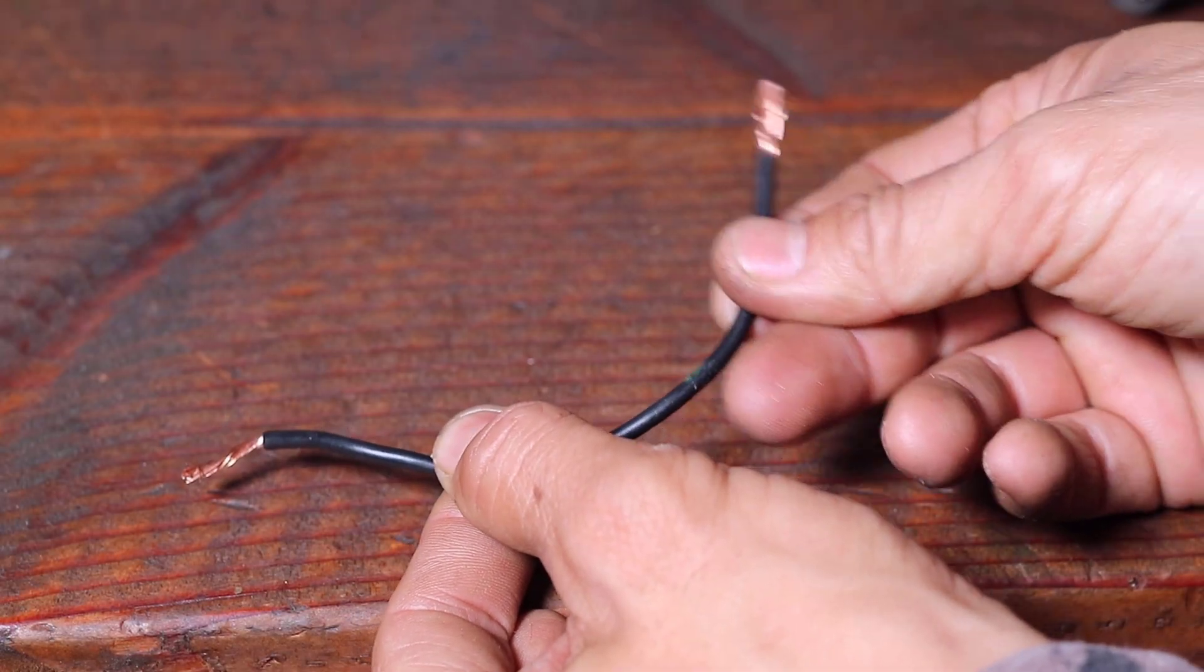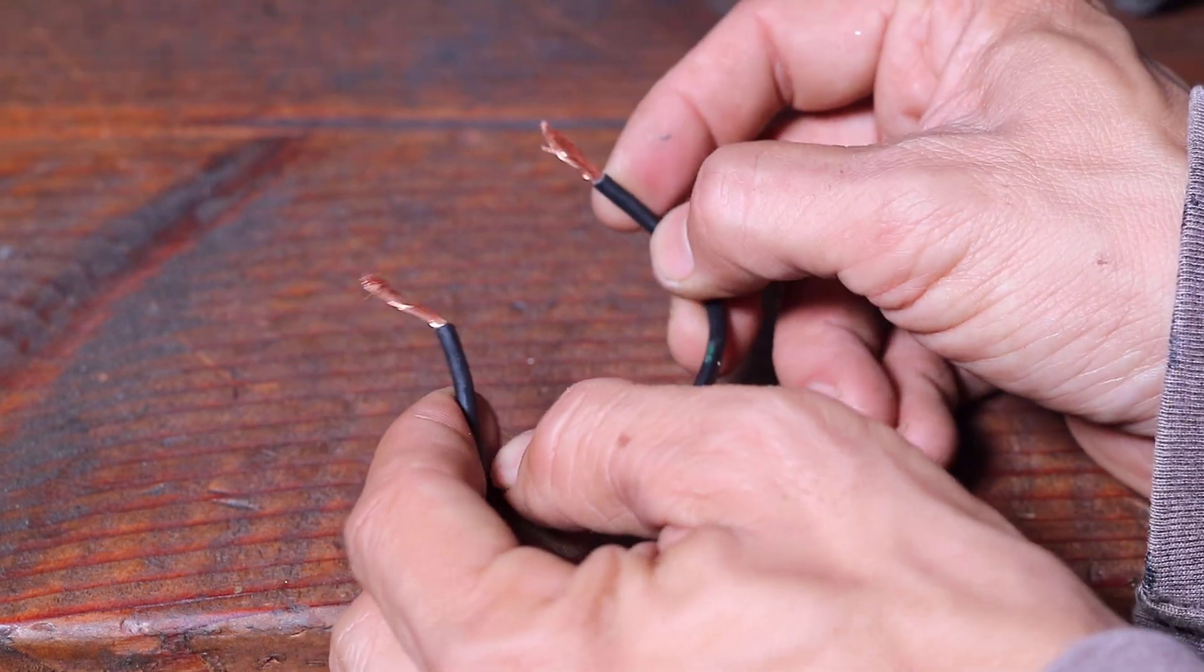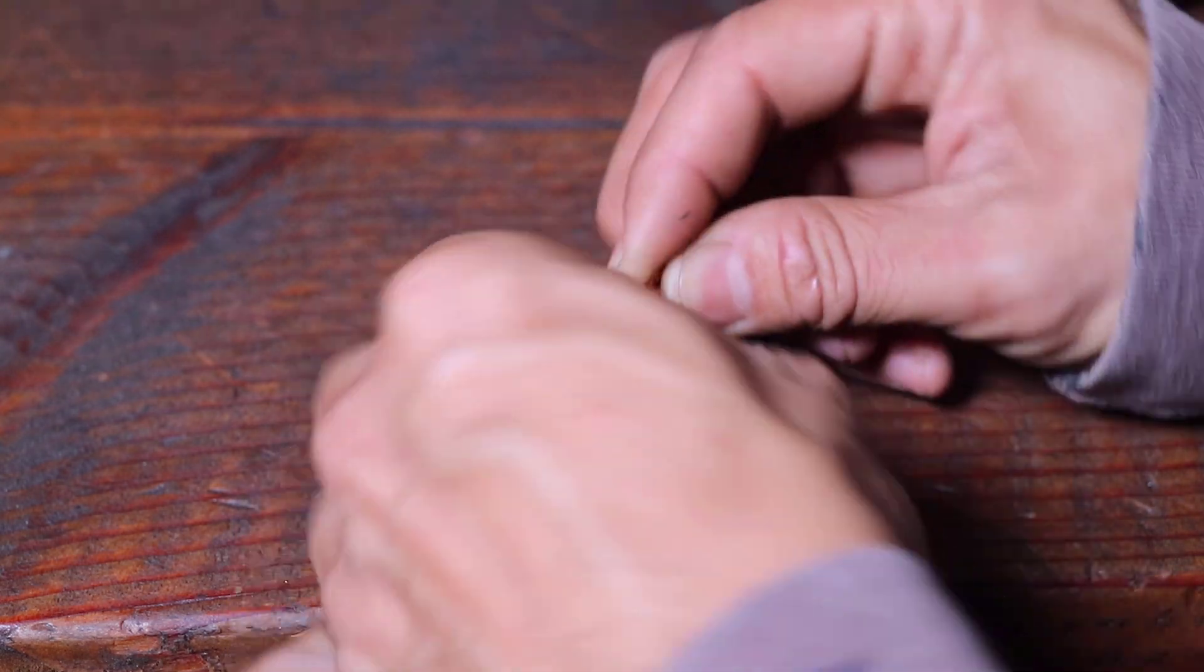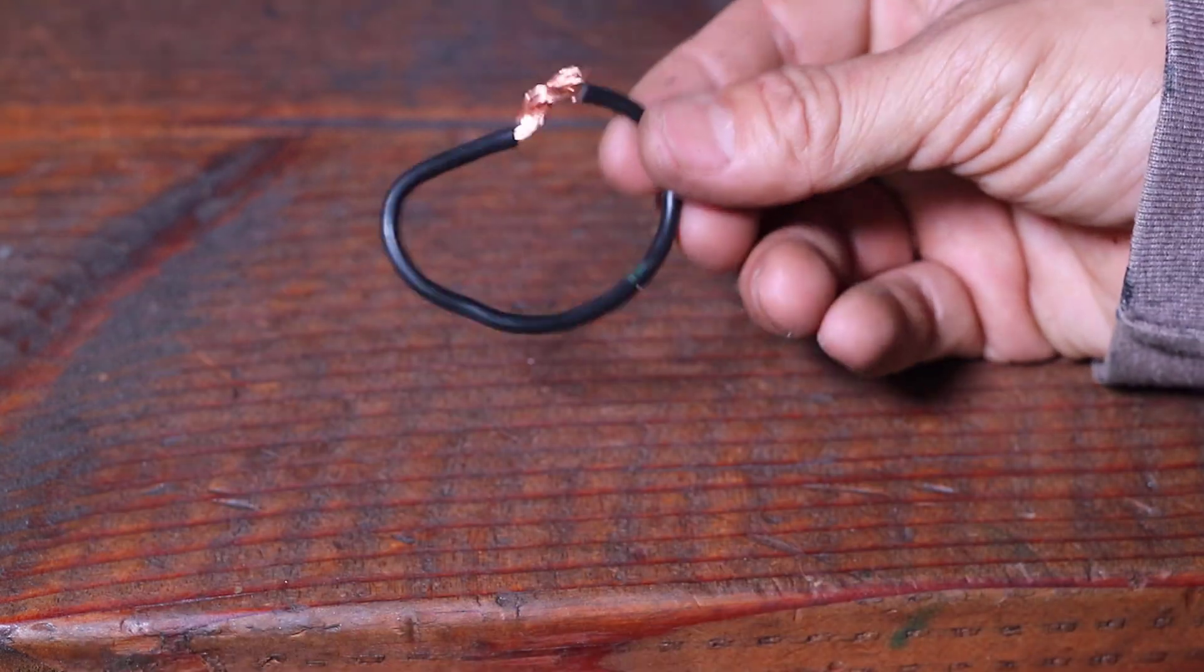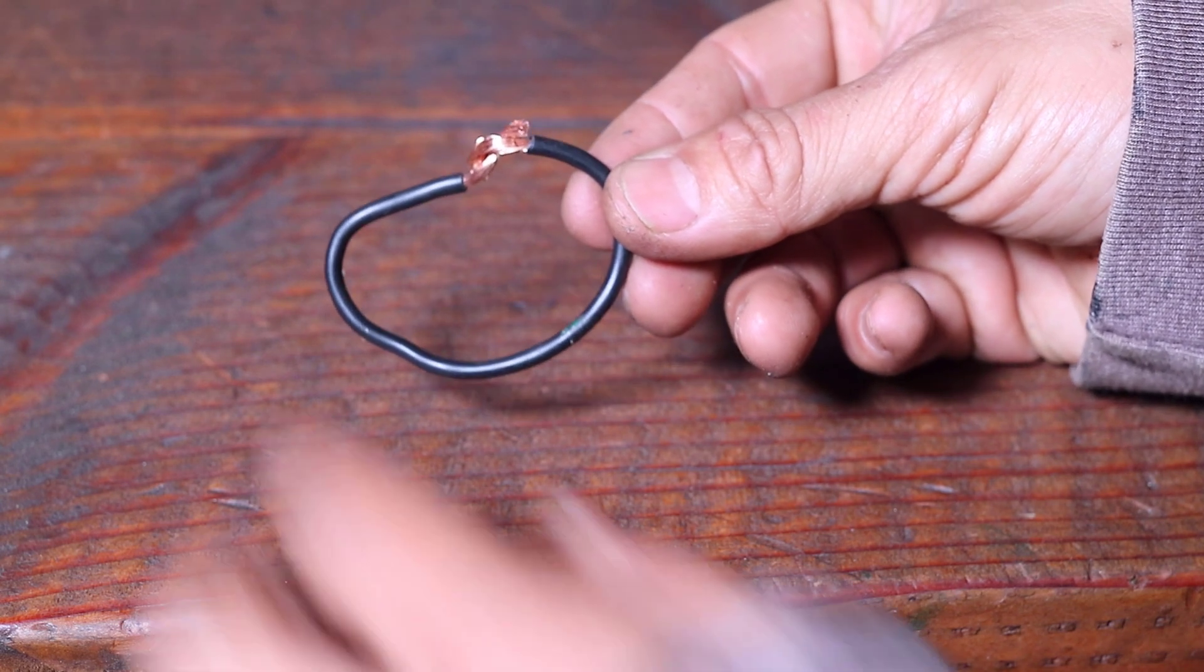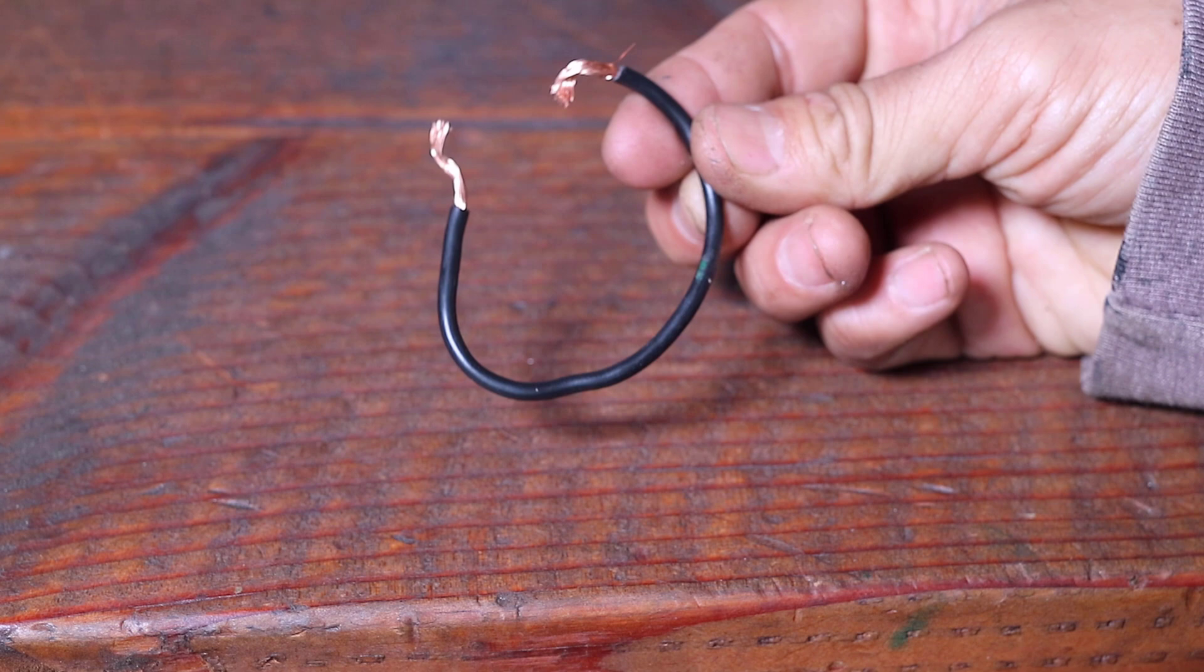When electricity can flow through a conductor, the route it takes is called a circuit. In this example we will use a wire to demonstrate a closed circuit. When the ends of the wire are connected, the electricity would be able to flow through. When the ends of the wire are open, the electricity is then an open circuit and electricity will not flow through.